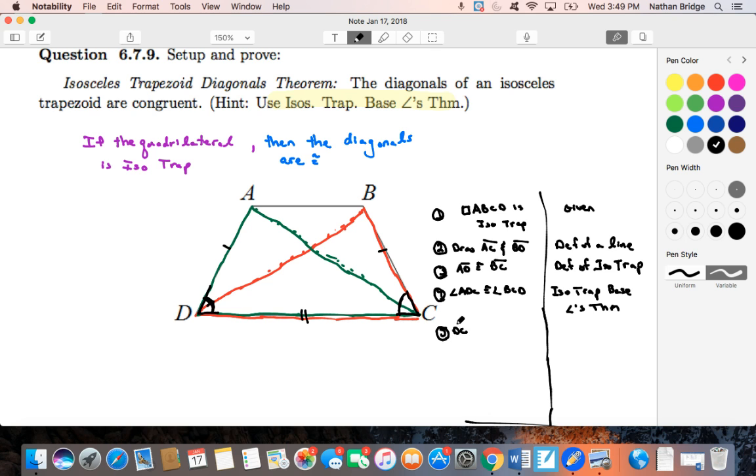and we know that D, C is congruent to itself because of the reflexive property. And now we step back and take a look. What do we got going on here? Well,